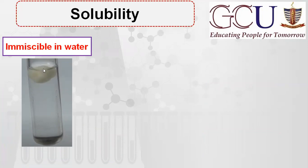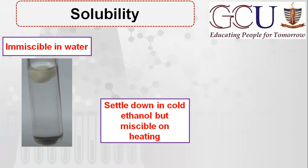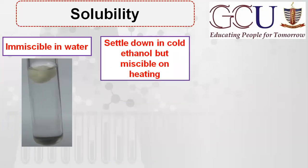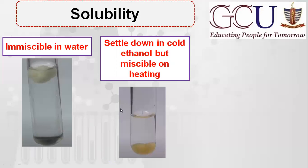This means triglycerides have lower density than water, so they form the upper layer in water. In cold ethanol, triglycerides form the lower layer, meaning their density is greater than ethanol. However, when heated, they become miscible in ethanol. If they are miscible on heating but form a lower layer in cold ethanol, this confirms they are lipids.